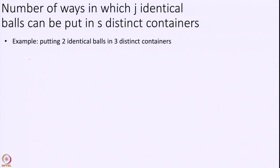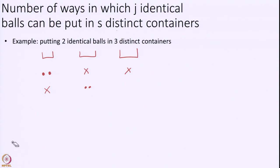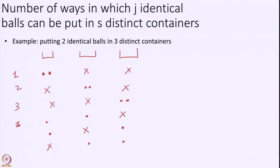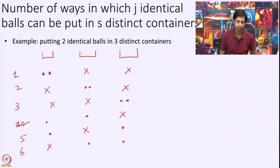With 2 balls and 3 containers, the possibilities are: both balls in container 1 and nothing elsewhere; nothing in container 1, both in container 2, nothing in container 3; nothing in containers 1 and 2, both in container 3; one ball in container 1, one in container 2, nothing in container 3; one in container 1, nothing in container 2, one in container 3; and nothing in container 1, one in container 2, one in container 3. These are all 6 possibilities.